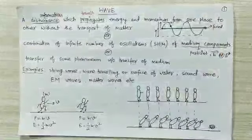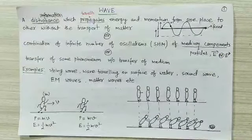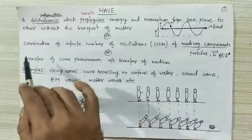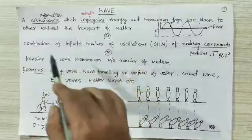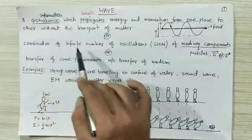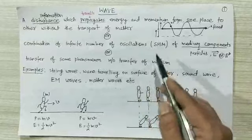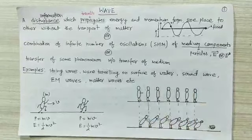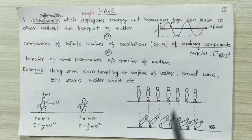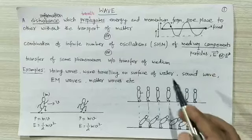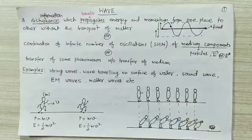Now see the second definition of wave. A wave is a combination of an infinite number of oscillations or simple harmonic motions of medium components. Medium components can be the particles of the medium or it can be electric and magnetic fields, depending upon the wave.